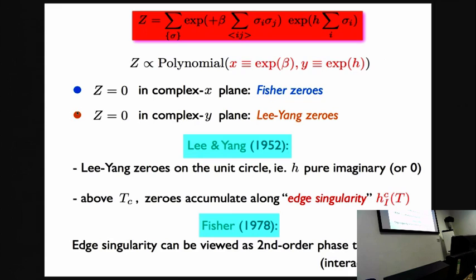Again, this is the partition function. If you define these variables X and Y, then up to some prefactor, the partition function is a polynomial in X and Y. It will have zeros in the complex X plane or complex Y plane. These zeros in complex X are called Fisher zeros and in complex Y are called Lee-Yang zeros.